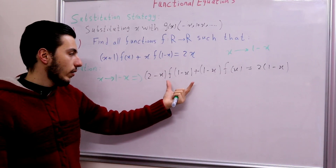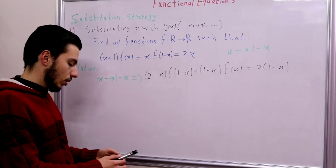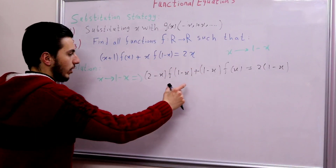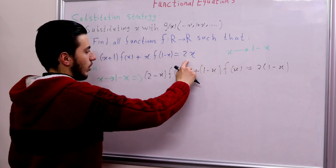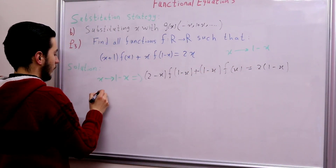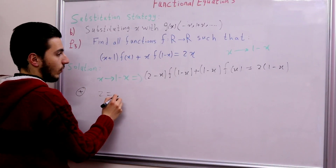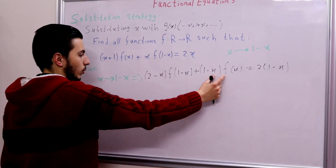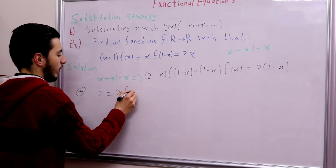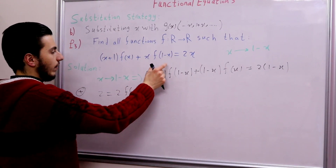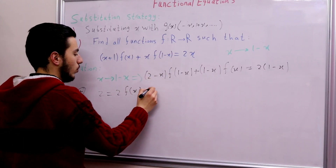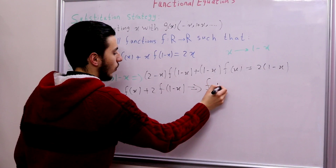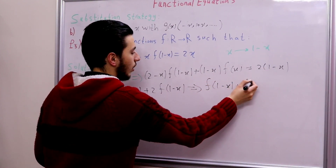Let's find the value of f(x) by solving these two equations. What I'll be doing is summing them up. When we add the two equations, the −2x and +2x terms cancel, leaving 2. On the f(x) side we get (x + 1) + (1 − x) = 2, and on the f(1 − x) side we get x + (2 − x) = 2, so the sum gives us 2·f(x) + 2·f(1 − x) = 2.